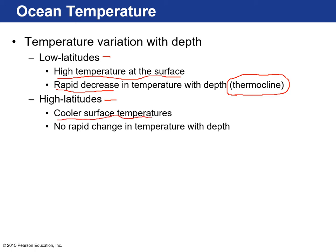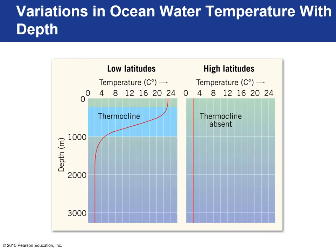That rapid change in temperature we refer to as a thermocline. At high latitudes, there's very cold water at the surface and as you go to deeper waters there really is no rapid change in temperature. Looking at a graph: the x-axis shows temperature from 0°C to 24°C, and the y-axis shows depth going deeper downward.